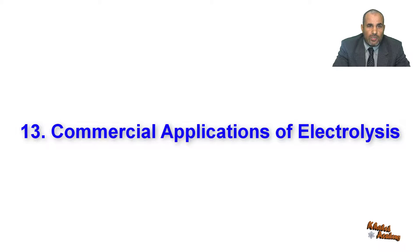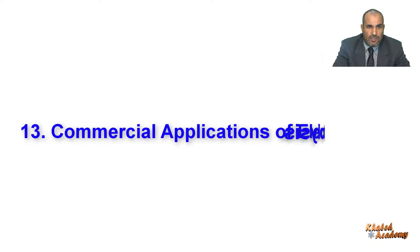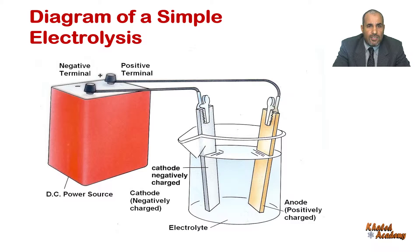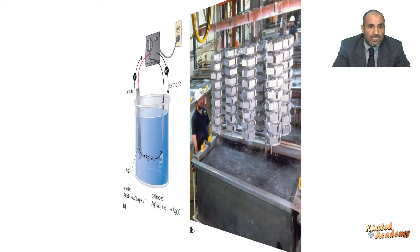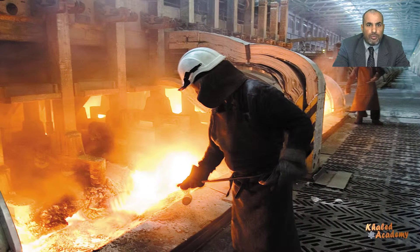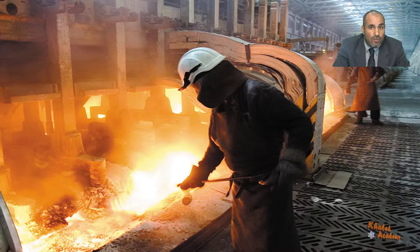In this episode we will talk about commercial applications of electrolysis. Electrolysis is used in the manufacture of many important chemicals and in numerous processes for purification and electroplating of metals. Let's look at some examples.